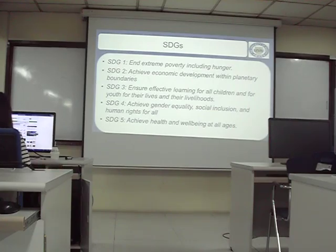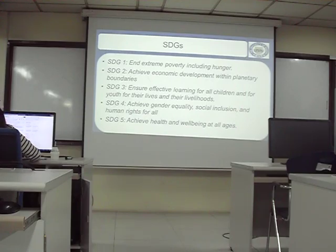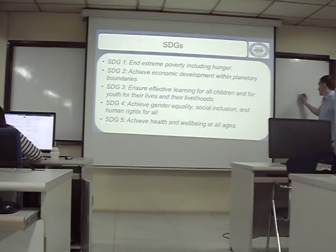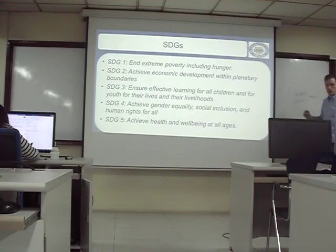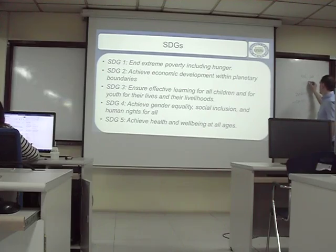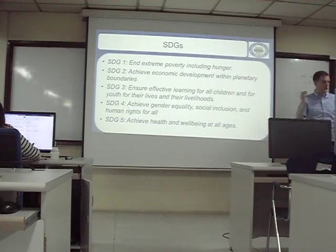The goals include: end extreme poverty, including hunger. The world is actually doing quite well on this. Before the SDGs, we had Millennium Development Goals made in 2000. They were quite successful — for example, they aimed at a 50% reduction in child poverty, and they were able to reach that goal. Some goals they could reach, some they couldn't. This is the new set of goals. Do you think they can do this in 10 years — end extreme poverty, including hunger?